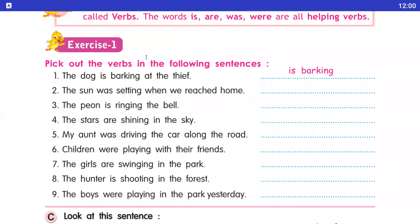Second sentence: the sun was setting when we reached home. Isme the sun humara subject hai. Aur iska work kya hai? Was setting. Was helping verb hai, aur setting jo humara main verb hai.